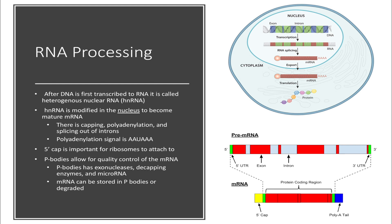Like most things in the body, we need to have a way to check that everything is okay. With mRNA, this occurs in cytoplasmic processing bodies called p-bodies. These p-bodies contain exonucleases to cut up the nucleic acids, decapping enzymes, and microRNA, which functions in RNA silencing and post-transcriptional regulation of gene expression. The mRNAs may be degraded or even stored in a p-body for future translation.